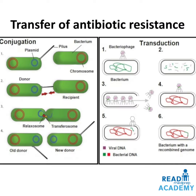Transfer of antibiotic resistance occurs through conjugation and transduction. In conjugation, bacteria possess extra-chromosomal material called a plasmid. A bacterium with a drug-resistant plasmid acts as a donor and transfers the plasmid to a recipient through a conjugation tube formed by the pili. The donor is called the laxosome and the recipient that receives the drug-resistant plasmid chromosome is called the transferosome. The old donor transfers the plasmid to a new donor and this continues throughout the population.